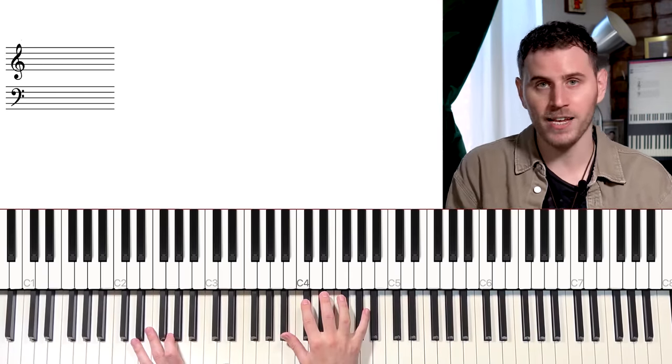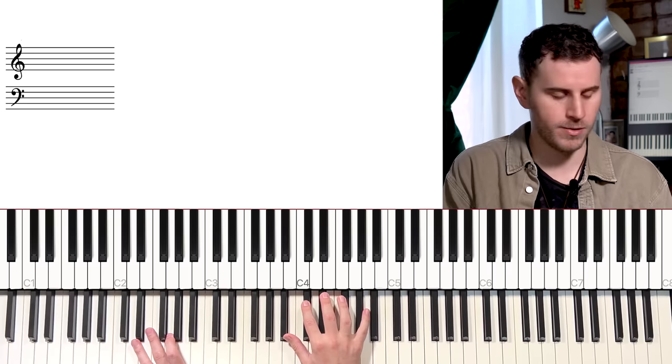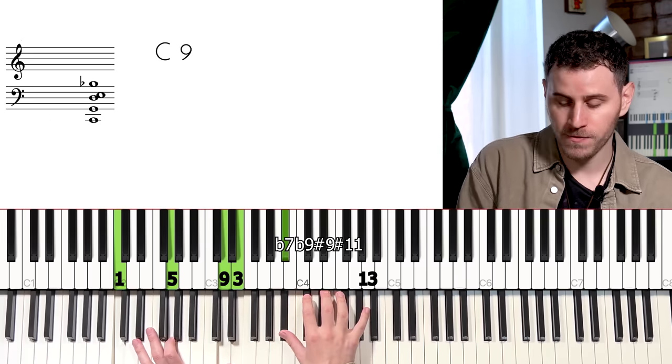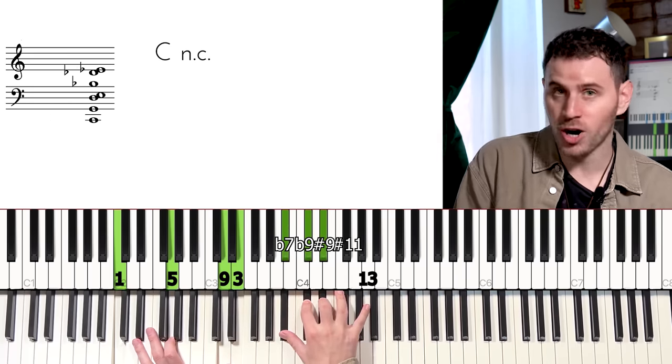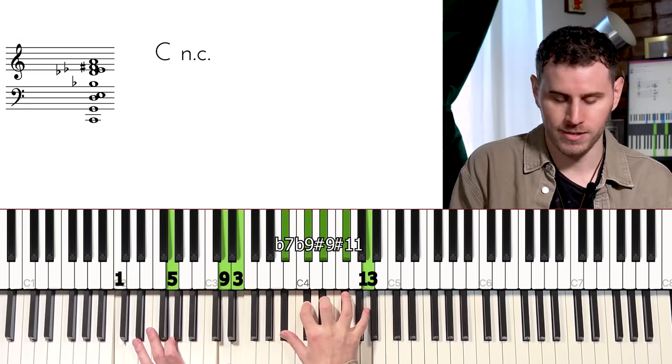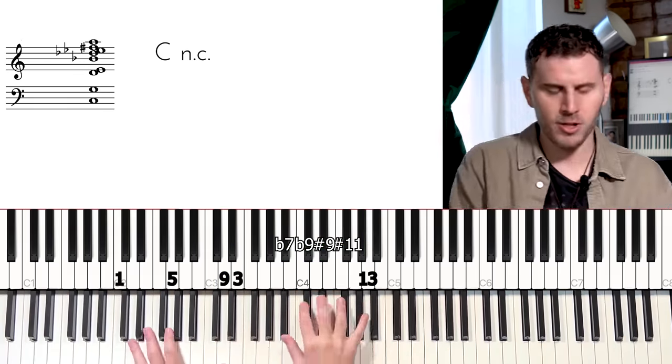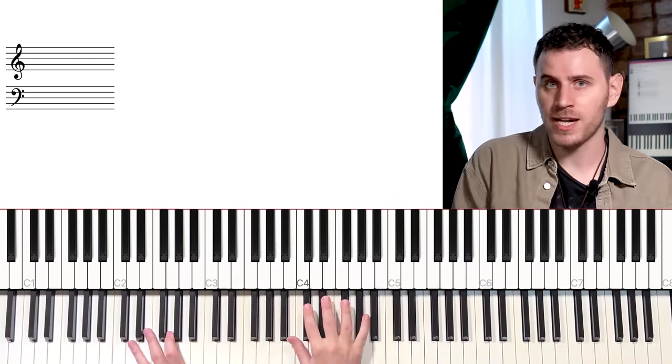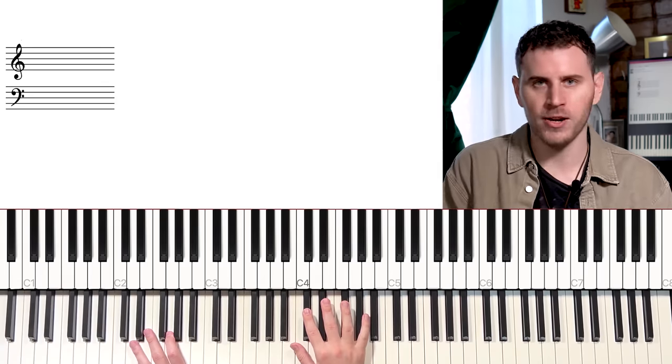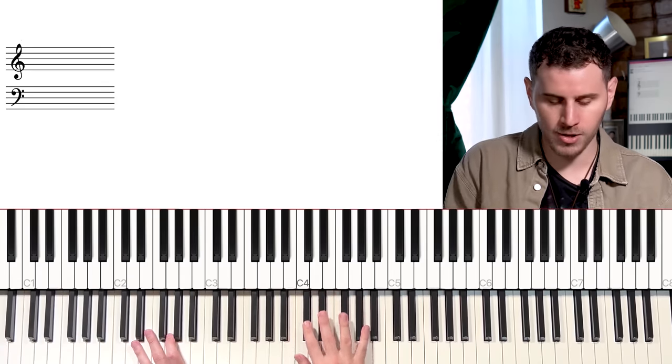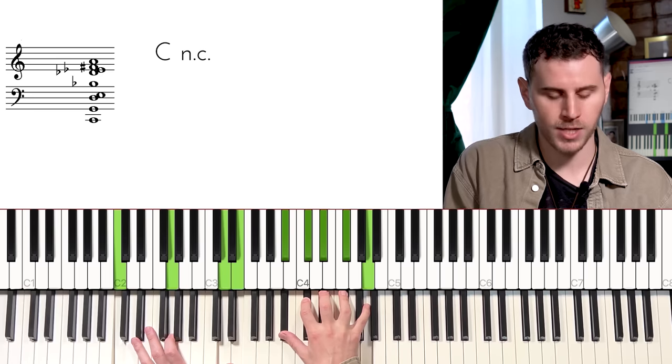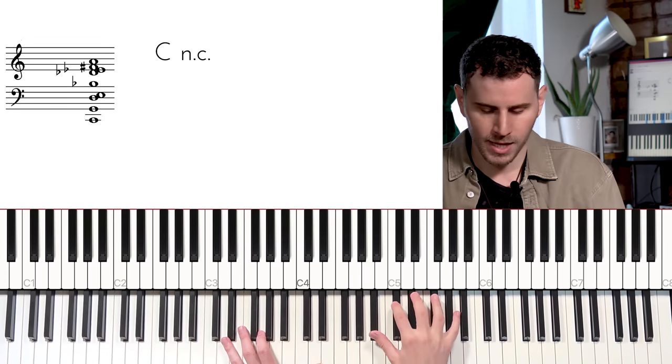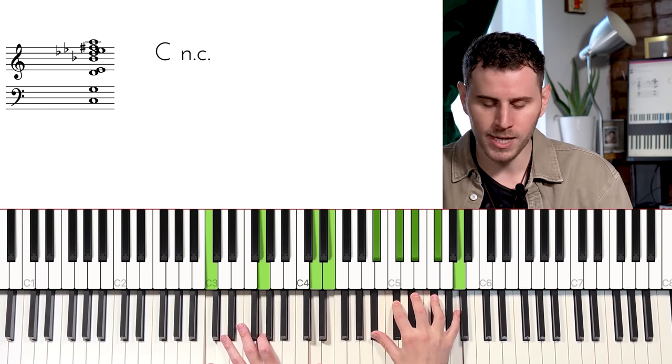This is so interesting. This is a nine note voicing that has no repeated notes. So in the key of C we've got 1, 5, 9, 3, flat 7, flat 9, sharp 9, sharp 11, and 13. So it's almost like the single most altered chord you could get. It strangely doesn't sound quite as crunchy to the ear as some of the other ones we've done today because this is all more or less from the altered scale, except that we're adding in this natural 9.